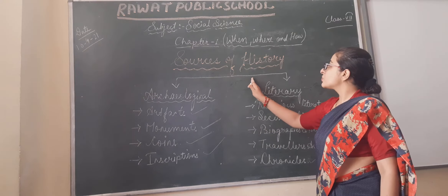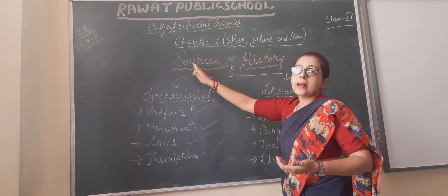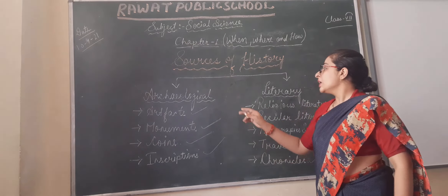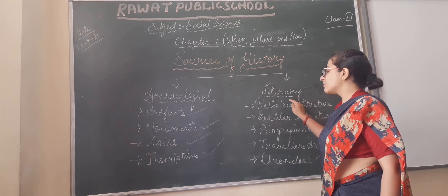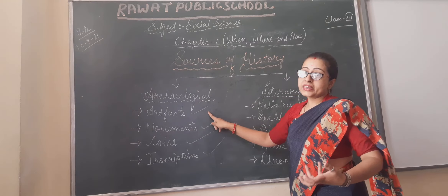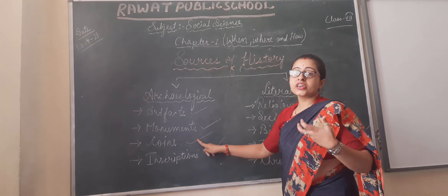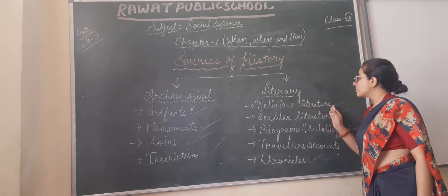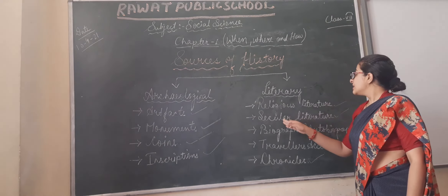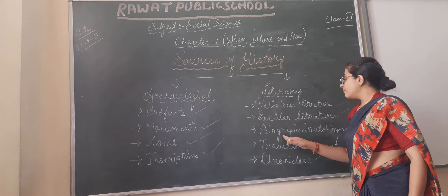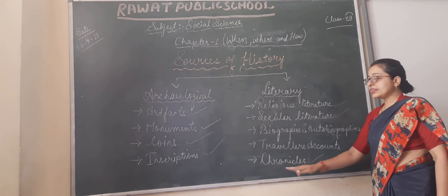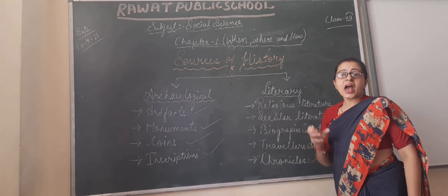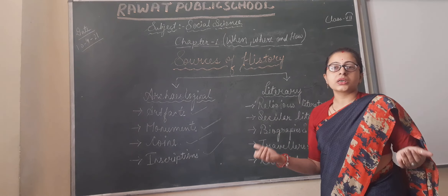To repeat: sources of history is divided into two types — archaeological source and literary source. In archaeological source, there are artifacts like paintings, monuments and buildings, coins inscribed by kings, and inscriptions. In literary source, there are religious literatures like Ramayana and Mahabharata, secular literature written by religious chiefs, biographies and autobiographies, travellers' accounts, and chronicles. All these give us various types of information about our history and help us to know about our past. Thank you.